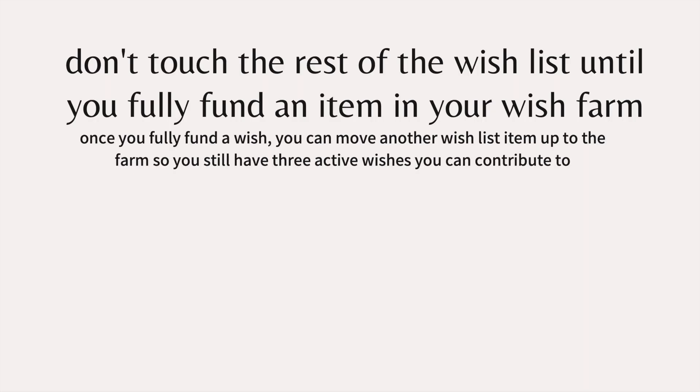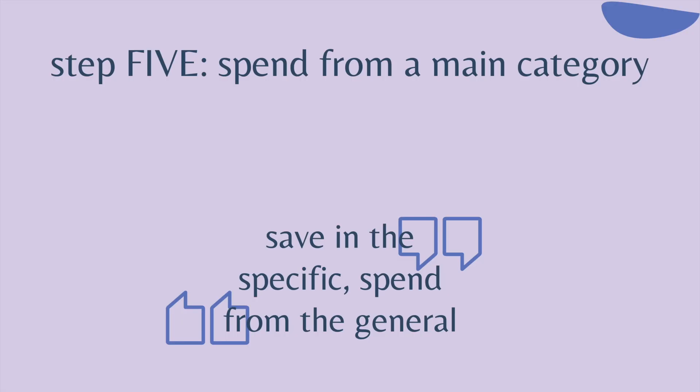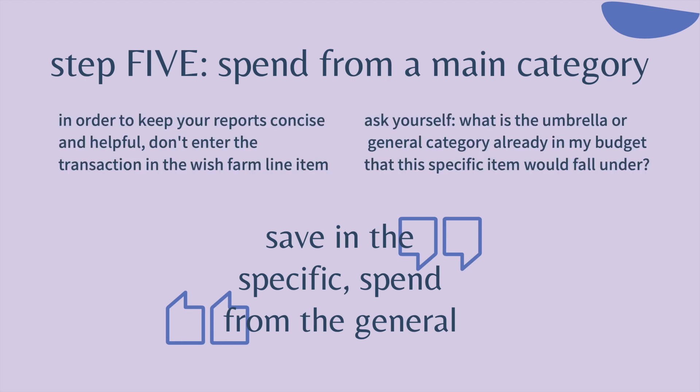Once you fully fund a wish, you can move another wish list item up to the farm so that you still have three active wishes you can contribute to. Here's an example where we've fully funded the dress suit tailoring at $150, so I've moved the standing desk up from the wish list to the wish farm. Step five is: once you've saved up the money for an item, make sure you spend the money from a main category. To keep your YNAB reports concise and helpful, you don't want to enter the transaction in the wish farm line item. Ask yourself what umbrella or general category already in your budget this item would fall under. A good quote to remember: save in the specific and spend from the general.